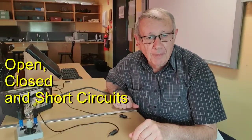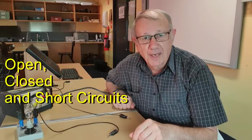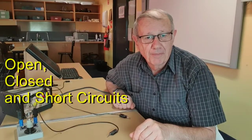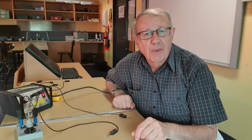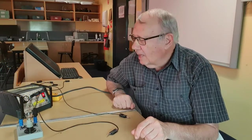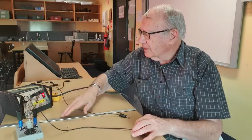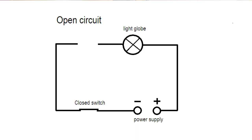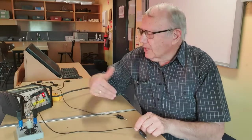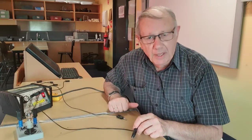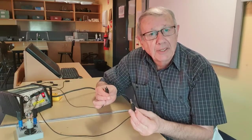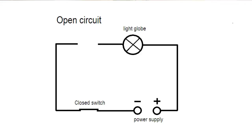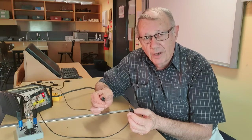I want to explain a couple of terms when it comes to electrical circuits. First of all, the term open circuit. I've got an electrical circuit here and I've got this switch turned on — it's a closed switch. So the current is ready to go through, but the circuit is open. These two are not connected, so the current cannot flow through it.